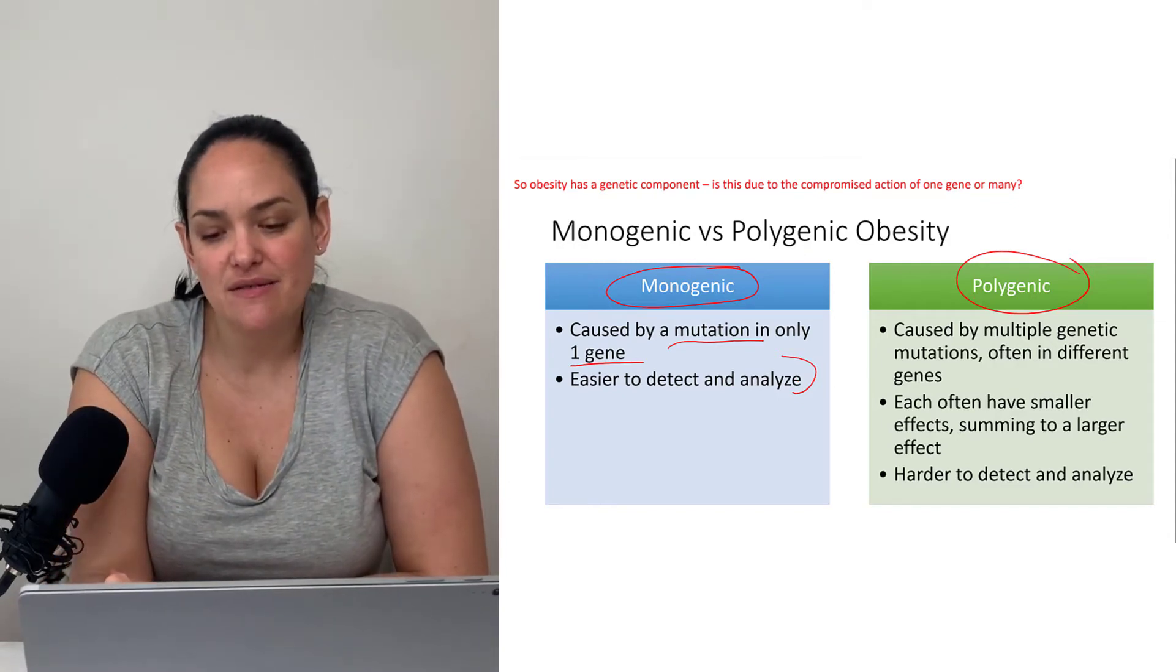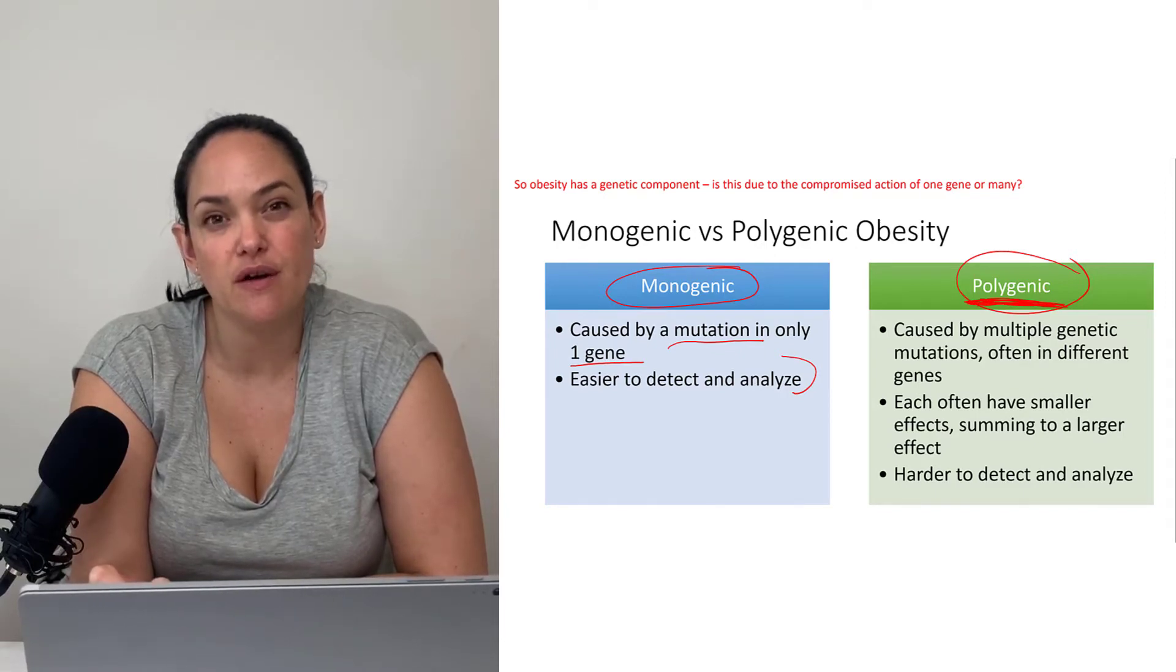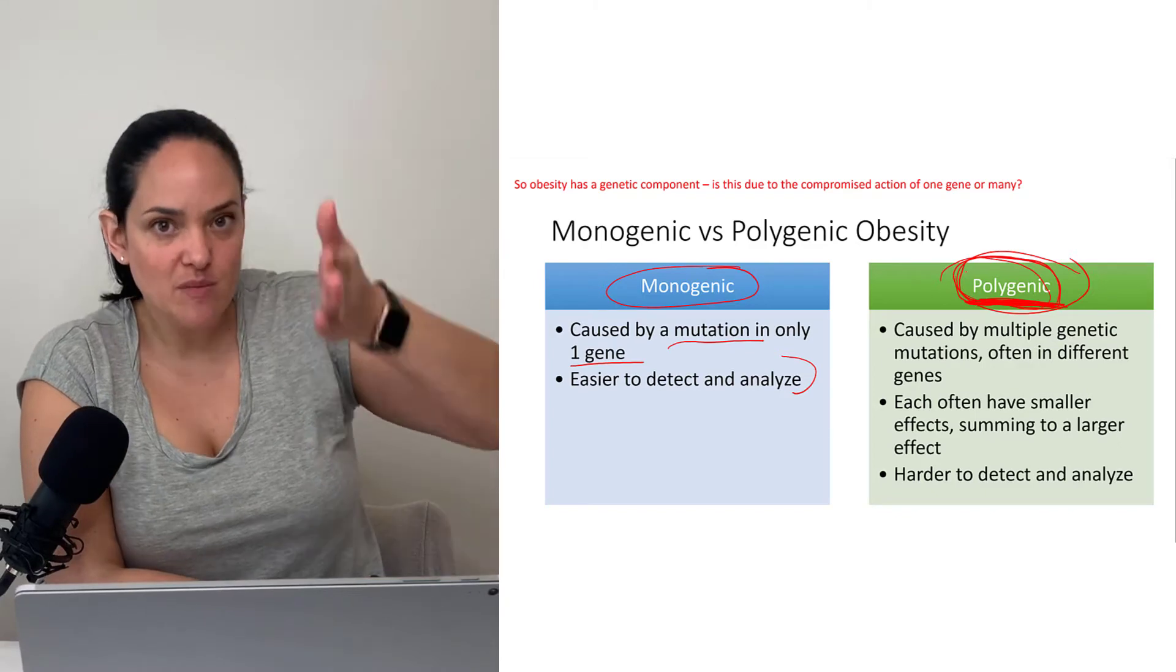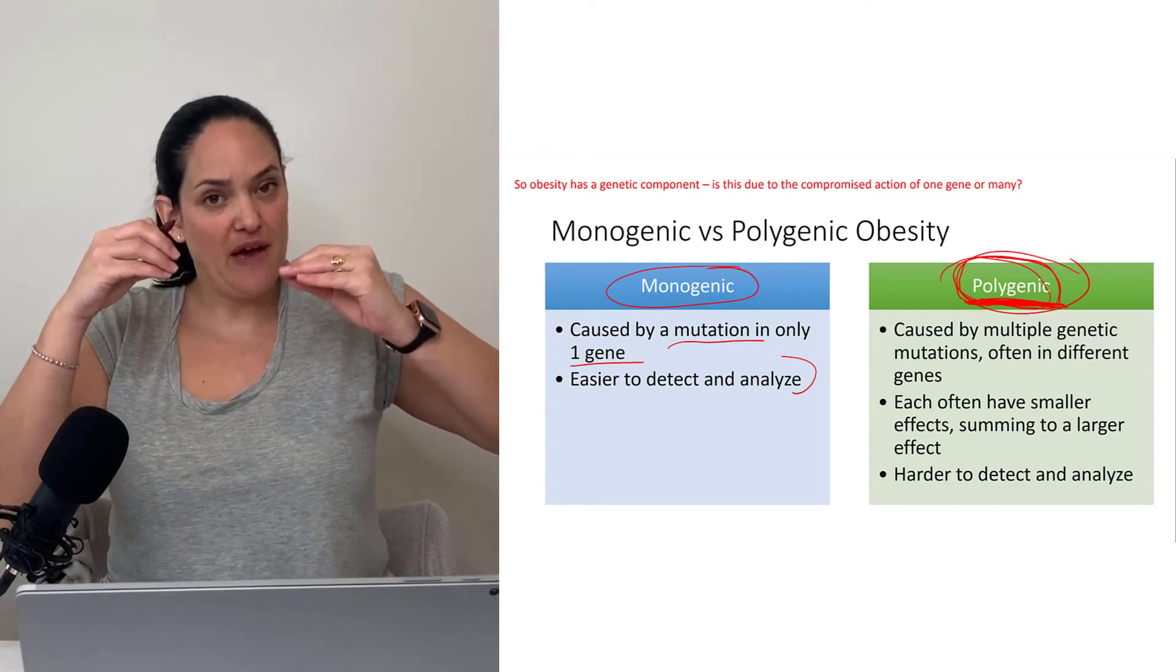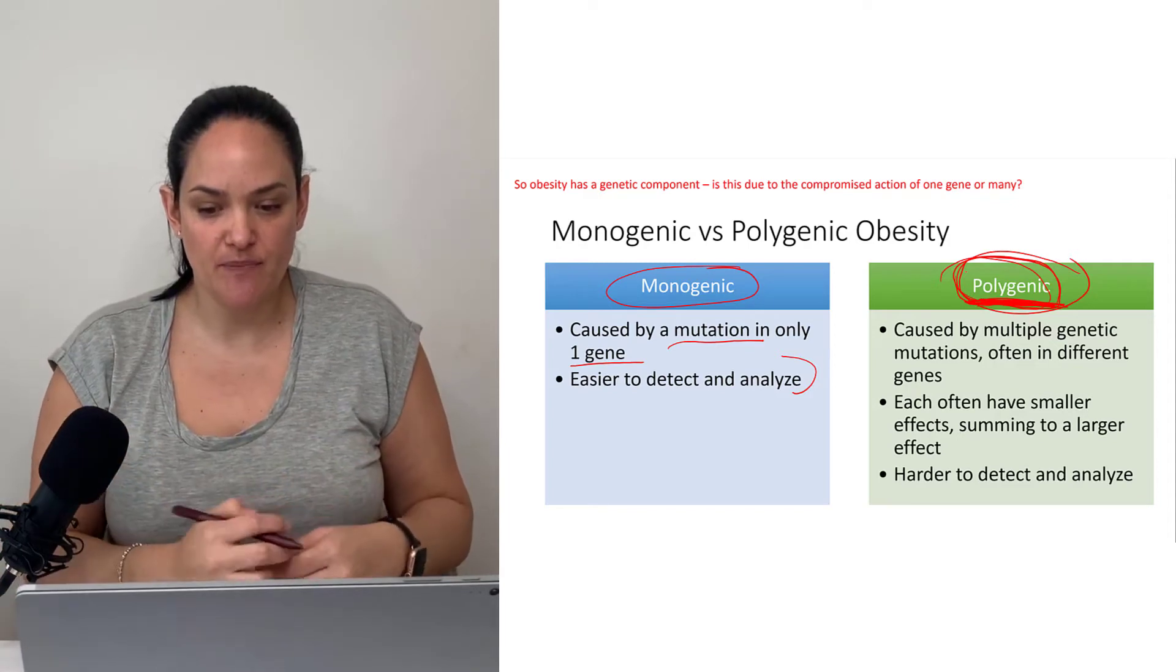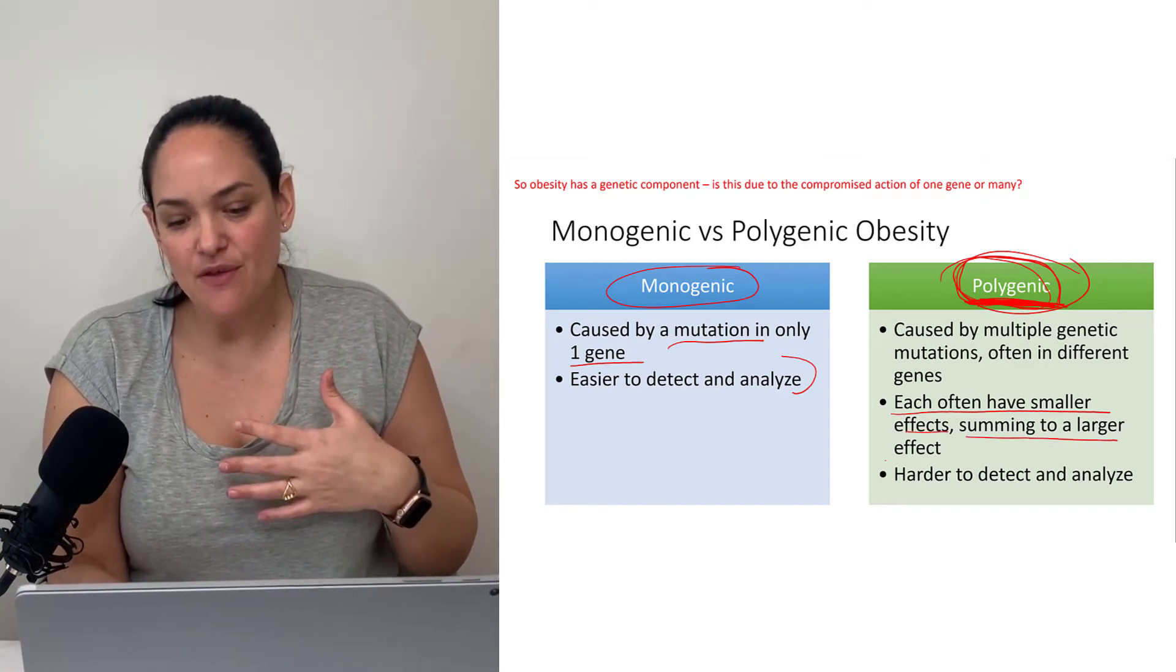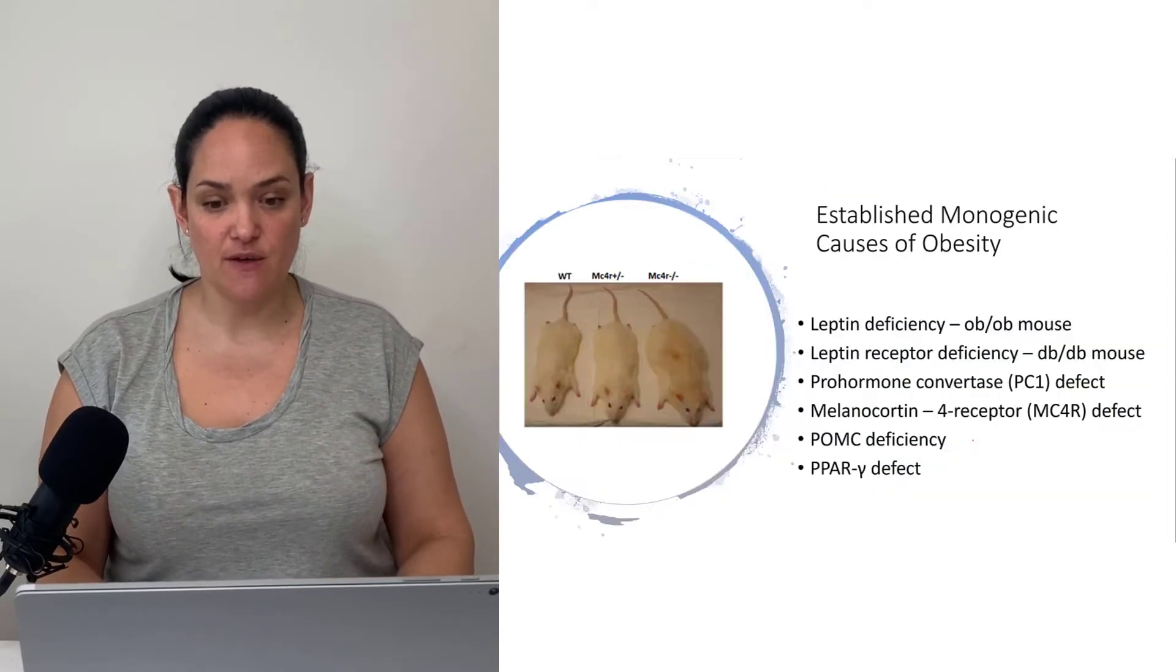However, not just with obesity but with a lot of other diseases, why it's harder to figure out the complete story of genetic origins is that these diseases tend to be polygenic, which means it's not caused by one gene. Each of those genetic changes has some sort of additive effect. Each genetic change has small effect, but together they create this larger effect, which is what we see in obesity more than anything else.